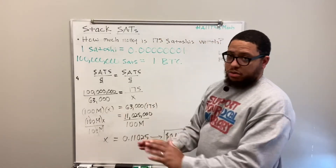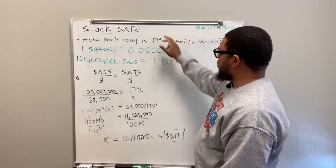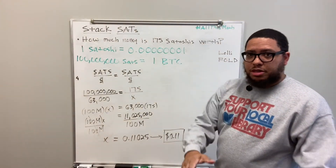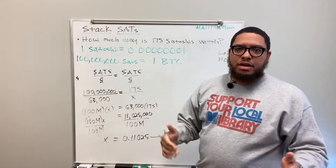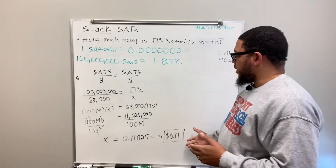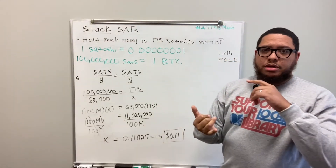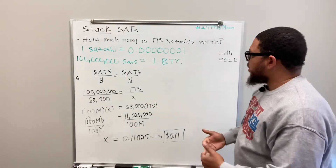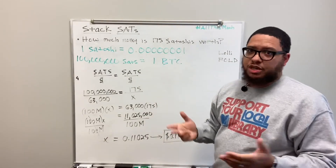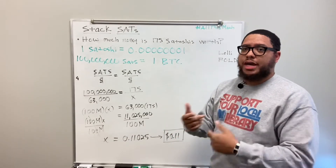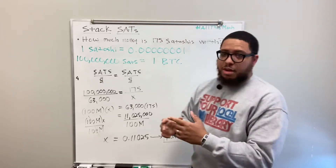Right now, 175 satoshis is worth 11 cents. This can change because the value of Bitcoin changes daily. Some might say 11 cents isn't much, but imagine getting 11 cents every single day. Some days on the Fold wheel you might only get five satoshis, but it adds up over time — consistently doing it 30 days a month, 12 months a year, that money accumulates.